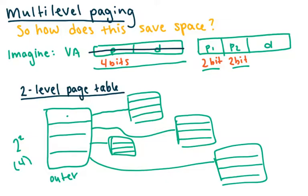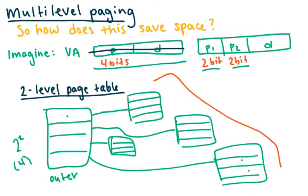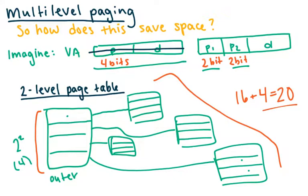At this point you're thinking: wait a second. Our single page table only had 16 entries, and now it looks like we're going to have those same 16 entries in the inner tables plus another four in the outer table — that's 20, which is more. So that's not saving space. Where does the space saving actually come in?